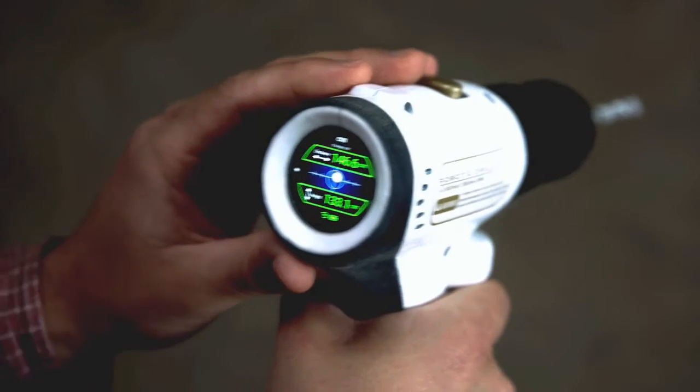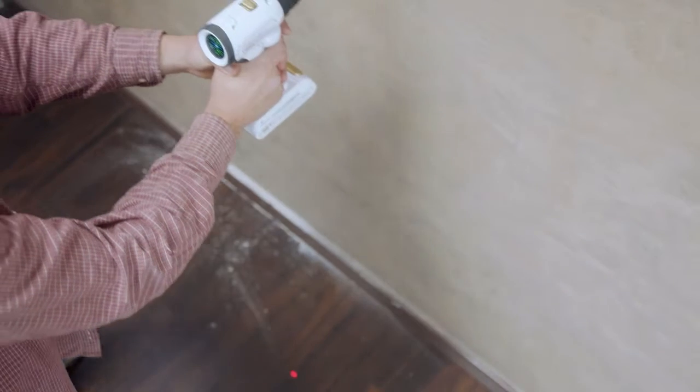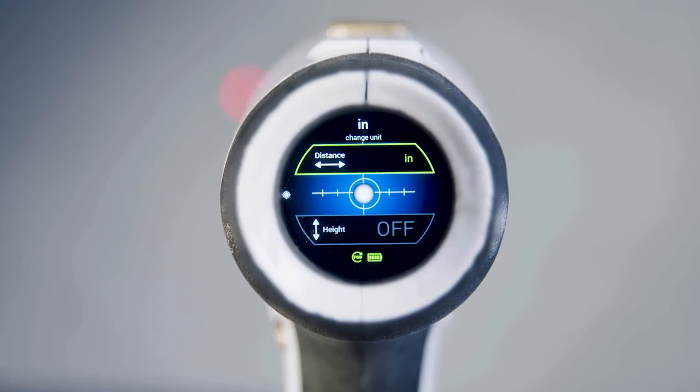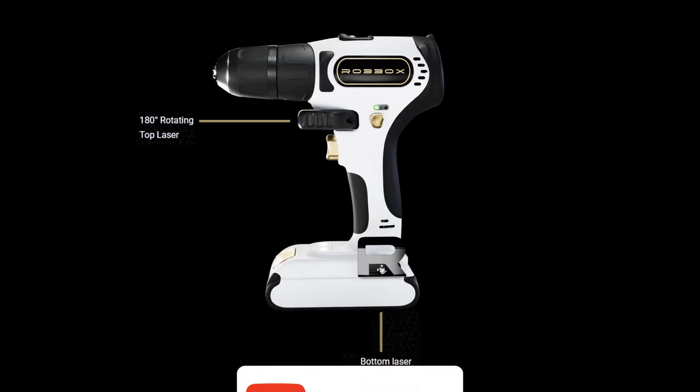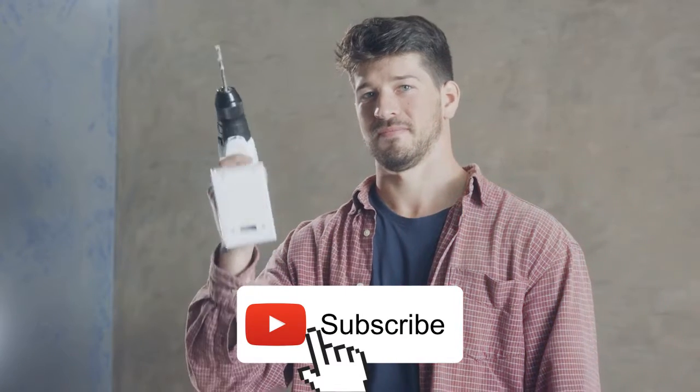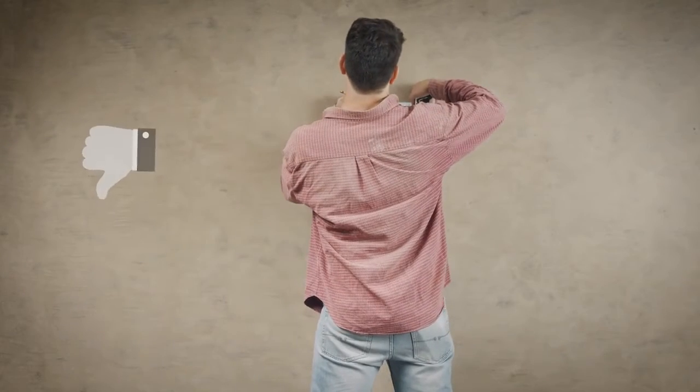Then comes the reimagined part. X-Drill is the first ever smart drill. First, there are the two lasers, one in the front and one on the bottom. Here's how they eliminate measuring tape and pencil.